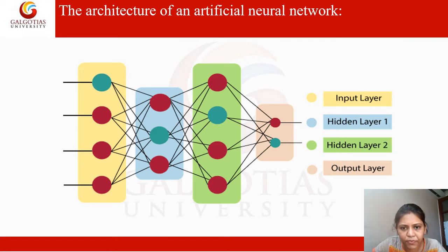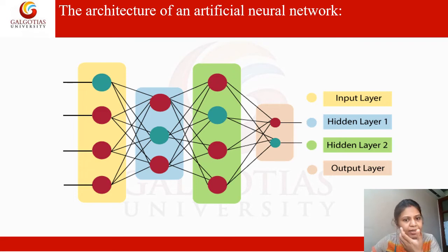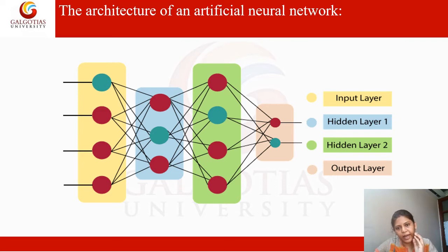In the second hidden layer, computation is also performed, and finally the output is produced. For example, we give input features like eyes, color, voice, and structure — and based on that, the output gives whether it is a dog or a cat. So this is the basic architecture of artificial neural network.